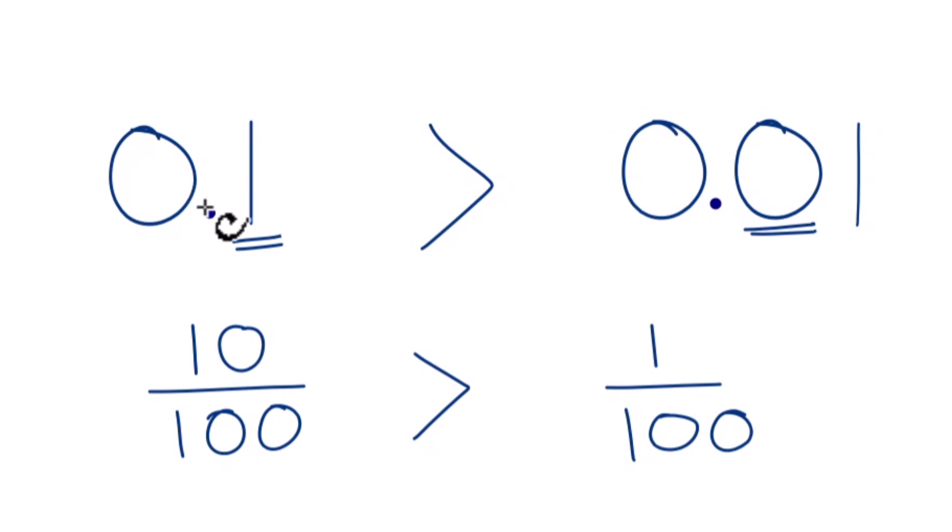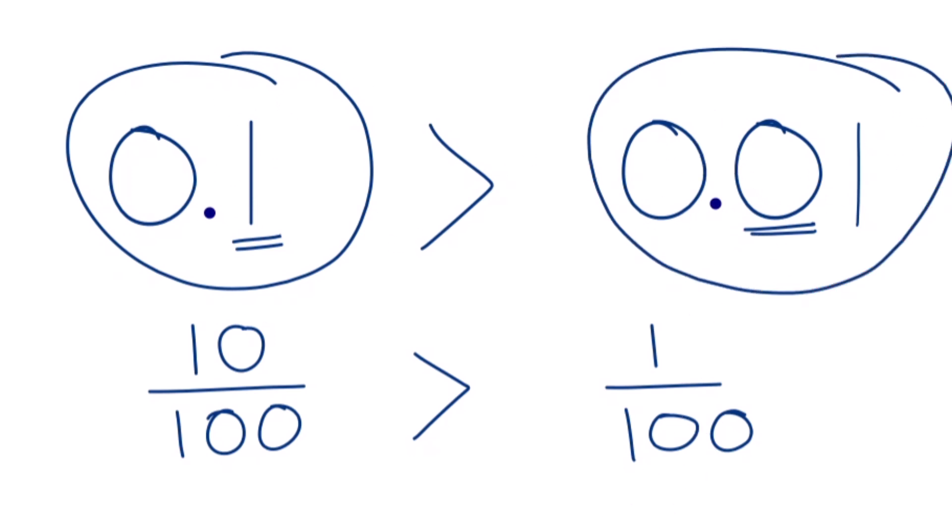Therefore, the decimal 0.1 is greater than 0.01. This is Dr. B. Thanks for watchin'.